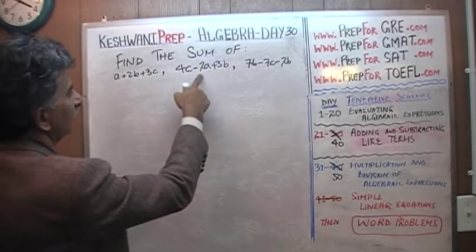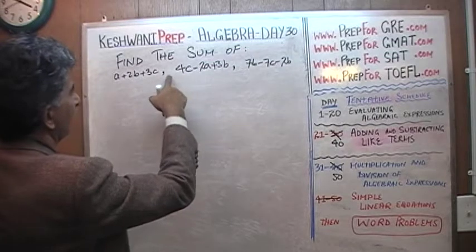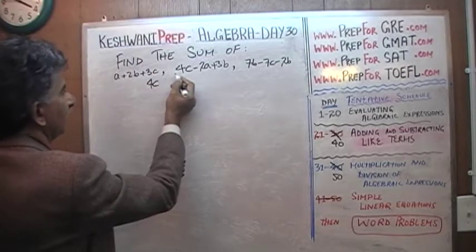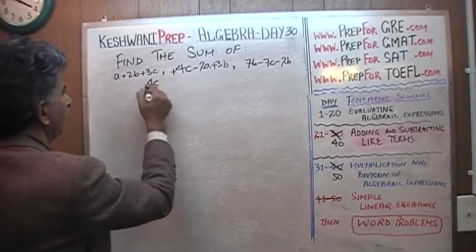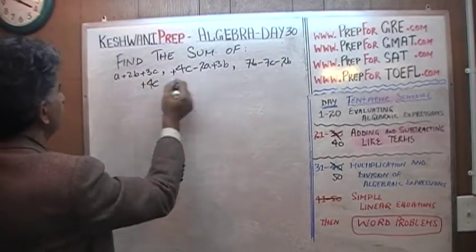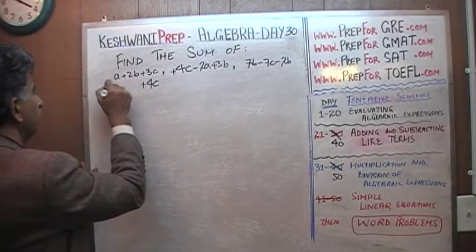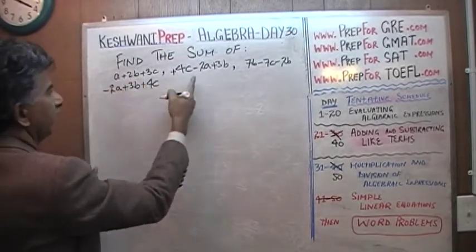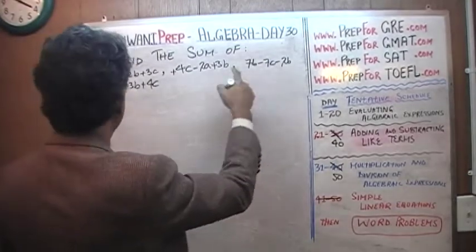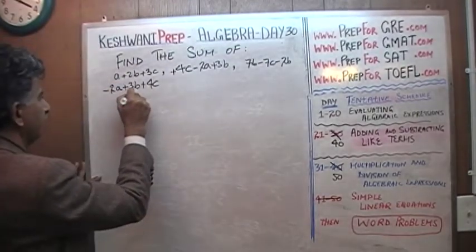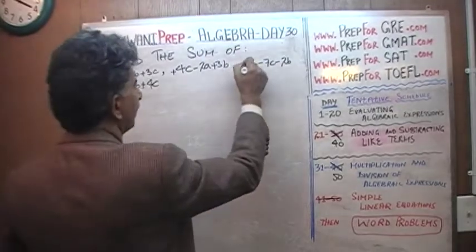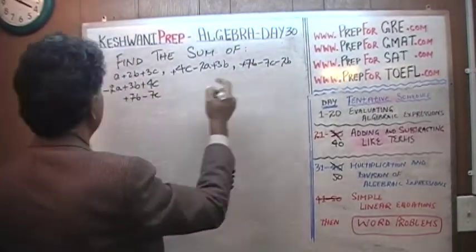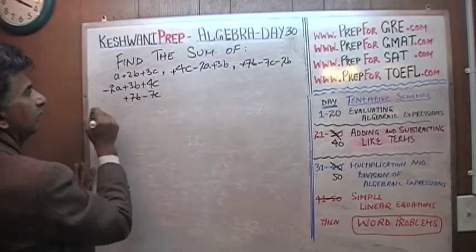In the second expression I have 4c minus 2a plus 3b. They have to line up — c has to go under c, b has to go under b. So 4c, which has no sign in front so it's positive, goes here. Minus 2a goes here, and plus 3b goes here. That takes care of that expression. For the last one: positive 7b, minus 7c, and negative 2b.